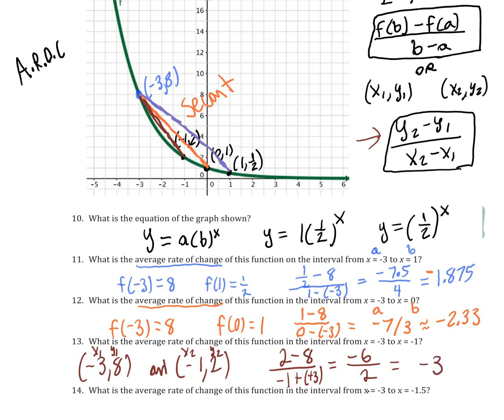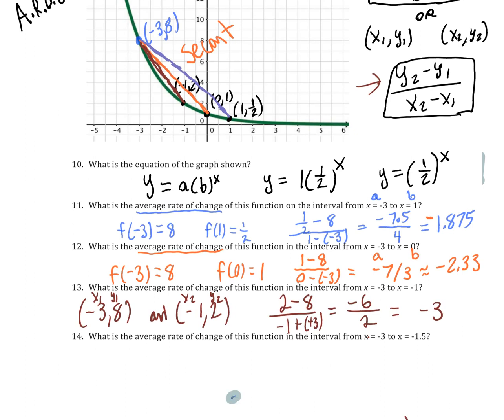So it's as we predicted, even steeper. And then finally the average rate of change on this function on the interval from -3 to -1.5. So that's going to be (-3, 8) and (-1.5, ...). I could approximate or I could use the rule that we developed. So we know we're looking for (1/2)^(-1.5), and so if I do that calculation in my calculator I get 2.83. So that's (-1.5, 2.83). So then again I have x₁, y₁, x₂, y₂. So to find the average rate of change I'm looking at 2.83 minus 8 divided by -1.5 minus (-3).